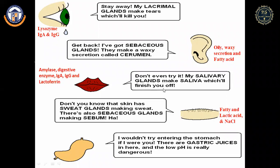In the mouth, amylase enzymes and digestive enzymes present in saliva contain antibacterial and antiviral substances that destroy entering microbes. The skin has sweat glands and sebaceous glands, both with antimicrobial properties against foreign antigens. The stomach contains gastric juices with very low pH, allowing no organisms to survive.